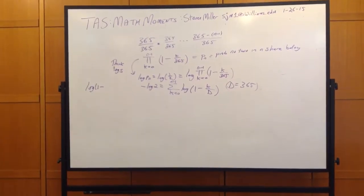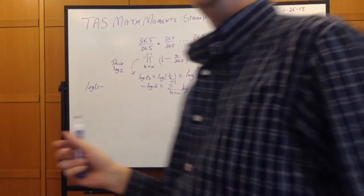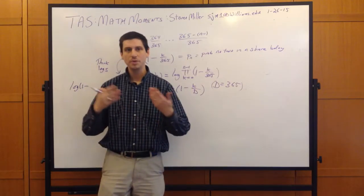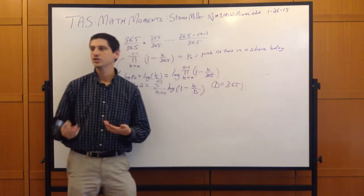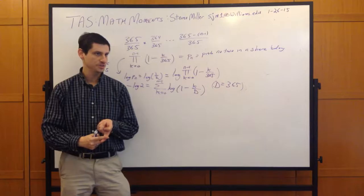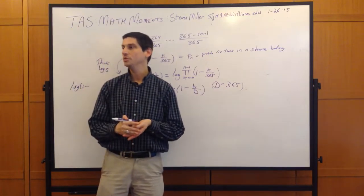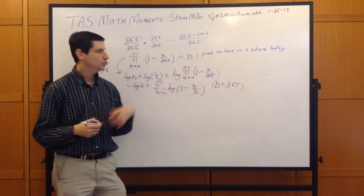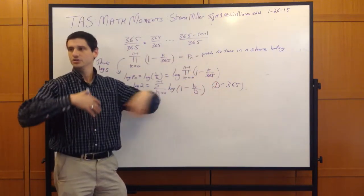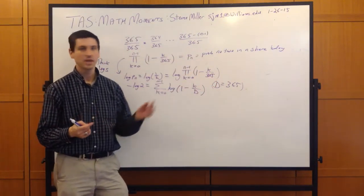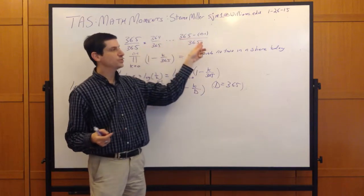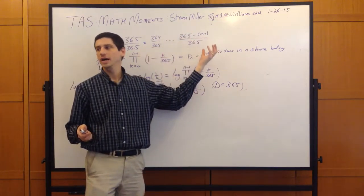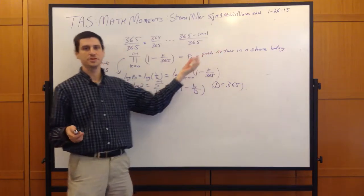So the question is, how many people do you need to have in a room before two people share a birthday? You want to make sure the question is well-formulated: exclude identical twins, assume all birthdays are equally likely, and assume nobody's born on February 29th, just to make the calculations easy. We can start by asking: for n people, what's the probability that no two of them share a birthday?